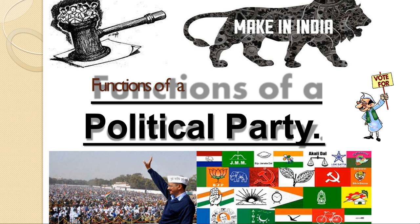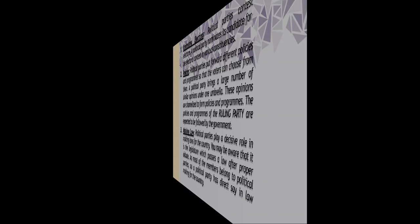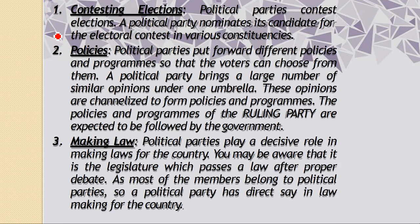What does a political party do? First, contesting elections: political parties nominate their candidates for the electoral contest in various constituencies. Second, making policy: political parties put forward different policies and programs so that voters can choose from them. A political party brings a larger number of similar opinions under one umbrella, and these opinions are channelized to form policies and programs. The policies and programs of the ruling party are expected to be followed by the government.